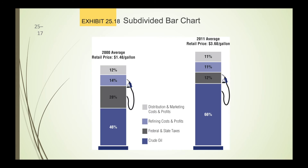The subdivided bar chart shows by the height of each variable how much of the bar it constitutes. Here you see the 2000 average retail price of gas at $1.48 a gallon — 46% was crude oil, 28% was federal and state taxes, and so forth. Look at how it's increased by 2011: 66% of what we're consuming is crude oil, while federal and state taxes have decreased, along with most other components other than the amount of crude oil.